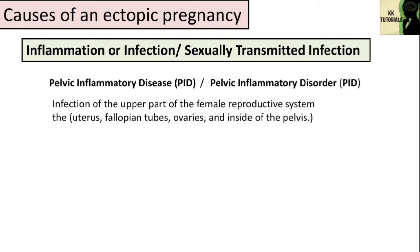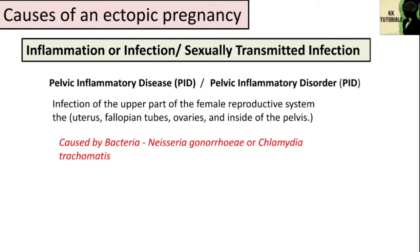PID is caused by bacteria Neisseria gonorrhoeae or Chlamydia trachomatis. Signs and symptoms may include lower abdominal pain, vaginal discharge, fever, burning with urination, pain with sex, bleeding after sex, or irregular menstruation. Untreated PID can result in long-term complications including infertility, ectopic pregnancy, or chronic pelvic pain.